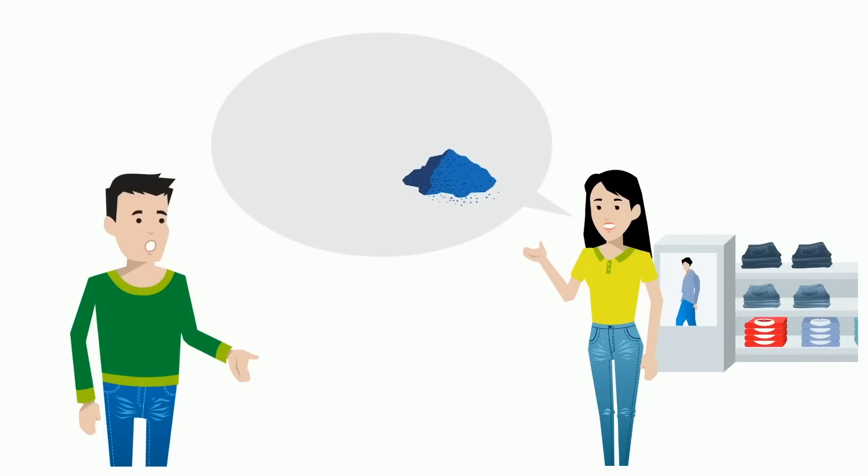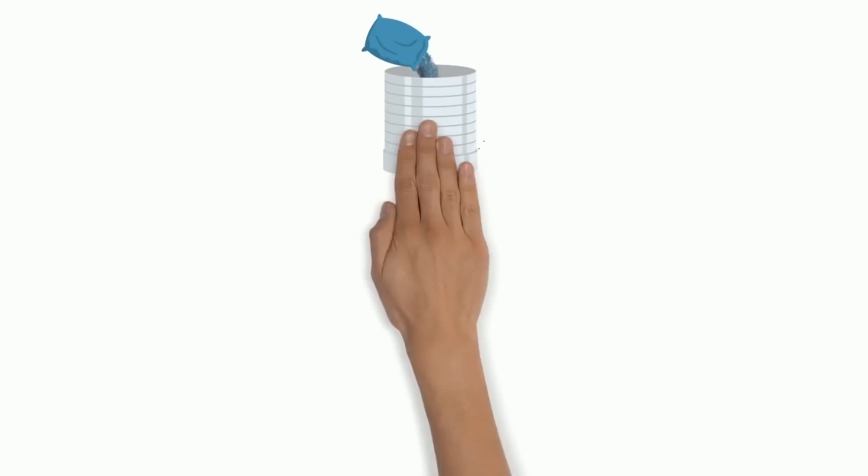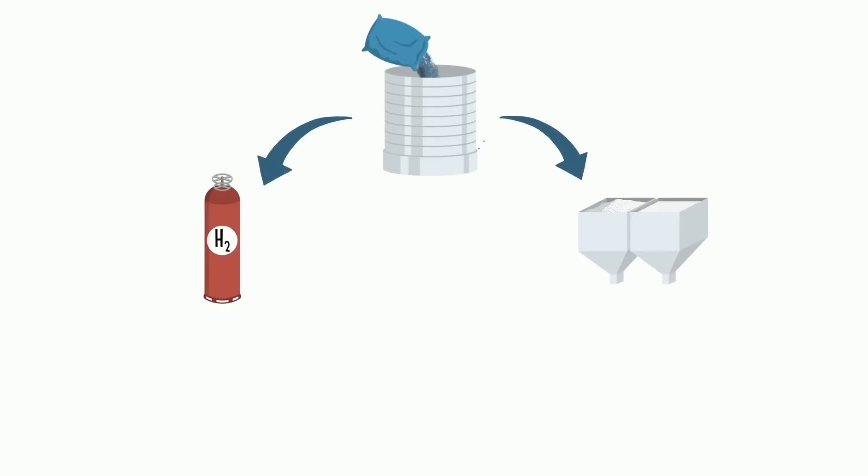Cheryl explains that indigo is special. Unlike most other colors, it is not water-soluble. To allow it to dye cotton, indigo pigment goes through a reduction process, either with other chemicals or hydrogen gas, to form a water-soluble green dye.